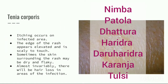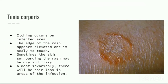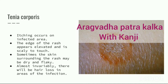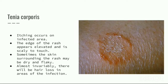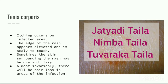Useful herbs include Nimba, Patola, Dhattura, Haridra, Daruharidra, Karanja, and Tulsi. Aragvada Patrakalka mixed with Kanji is applied over the circular area. The patient can also use Jatyadhi Taila or Nimba Taila for external application, or Tuvaraka Taila can also be used.